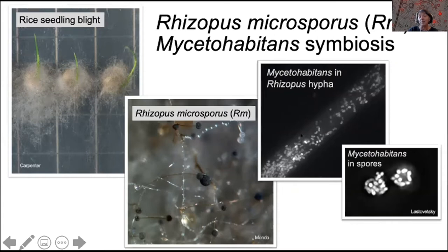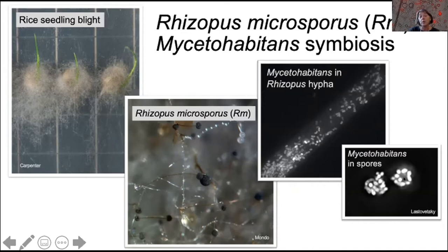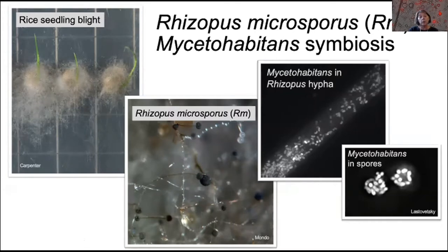Here is a hypha of rhizopus with mycetohabitans visualized by YFP expression. Here are two spores of rhizopus filled with mycetohabitans cells, and rhizopus microsporus mycelium and sporangia on sporangiophores.